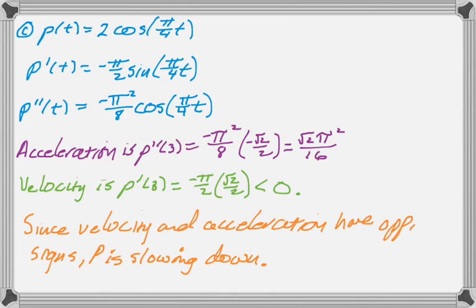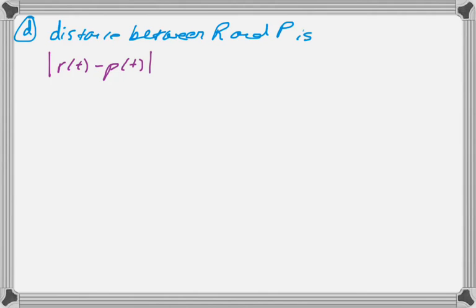The next part asks us something about an expression for the average distance. So I need to be able to state the distance between the particles. But the distance, since they're on the same number line, is just subtract their values. But we need absolute value because sometimes one is to the right and then the other is to the right and so on. So the distance between them is the absolute value of R of t minus P of t.